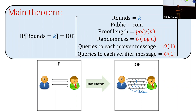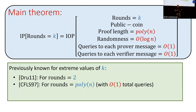Our main theorem says that you can take an interactive proof and transform it into an IOP with the same number of rounds. It's public coin, so the verifier's messages are not encoded — they're just uniformly random bits. The proof length is polynomial following the interaction. The verifier tosses a logarithmic number of random coins to decide where to query, and at the end queries each message a constant number of times. Previously this was only known for extreme values of k: by Dwork-Reingold for two rounds and by Condon-Naor for polynomial rounds.